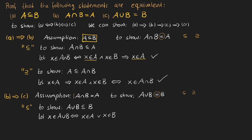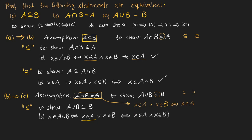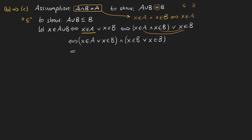For the next step we translate our assumption, which states that X is in A and X is in B if and only if X is in A. So we can move between the two sides of the equation. Because X is in A is equivalent to the left statement, we can replace it: X is in A becomes X is in A and X is in B. Expanding this, we get (X is in A or X is in B) AND (X is in B or X is in B). Since the statement is joined with a logical AND, we can imply the right side, which is X is in B or X is in B — the same as X is in B. And that is exactly what we wanted to show.